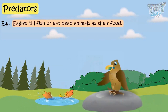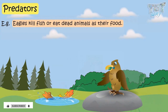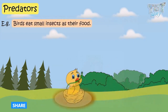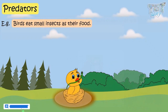Eagles eat fish or some dead animals as their food. Birds eat small insects as their food. Such animals are called predators.